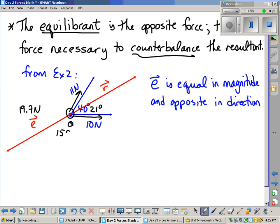Now, if you recall in the question before, we just figured out that this was 21. So 180 minus 21 gets us that this is 159 degrees. And so therefore, E is 19.7 newtons, exactly the same, but it's at 159 degrees to the 10 newton force.